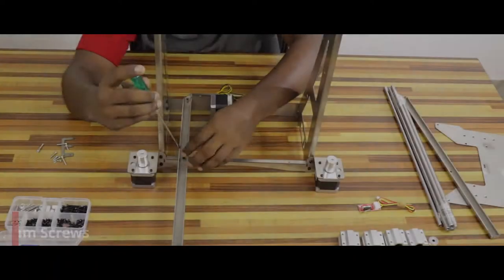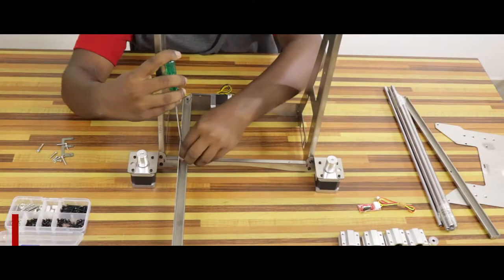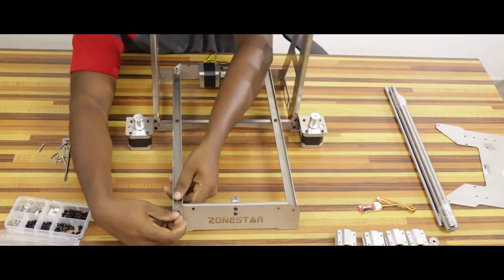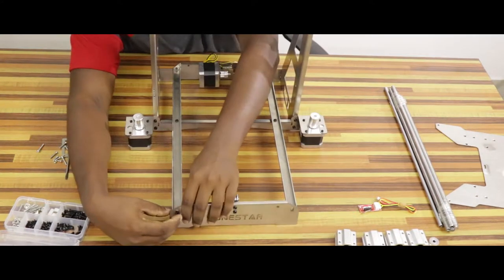Now, let's attach two Y-axis bracing pieces between the front and back base frames using six M4 6mm screws. This is going to be the platform over which the heat bed bracket moves.